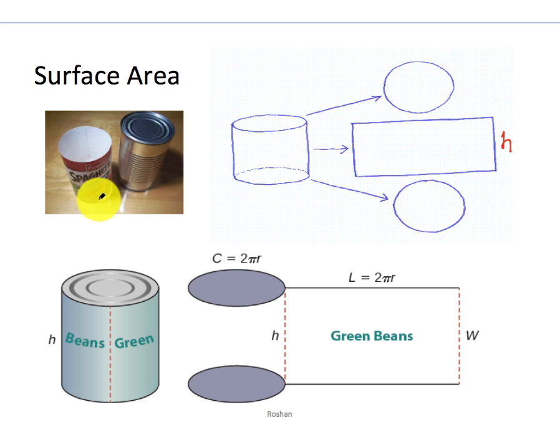But what is this length here? Well if I unrolled that, that length is actually just the circumference of my circle, right? So the circumference which is 2πr. That's the length of this. And how would I find the area? The area is the length times the width which is 2πrh. So that's the area of this middle part.